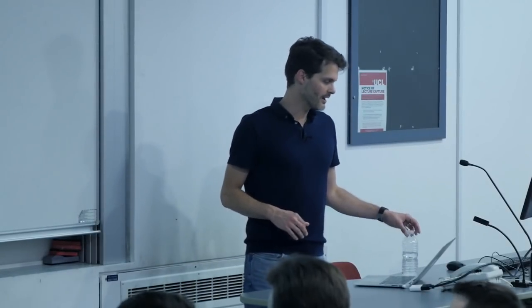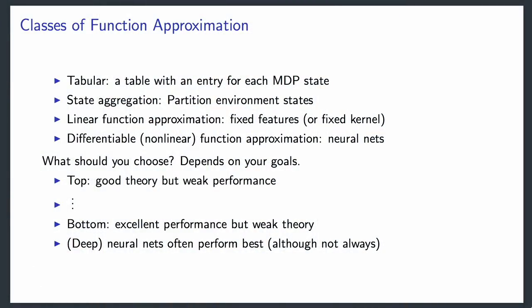Here are some generic choices for function approximation. We started with a table—storing an exact value for every possible state. An easy extension for continuous spaces is to cut the space up into pieces and call each piece a state, which effectively reduces the problem back to a tabular MDP. However, by doing so, you've aggregated states together, which means you might not be able to observe exactly which state you're in—making the problem partially observable.